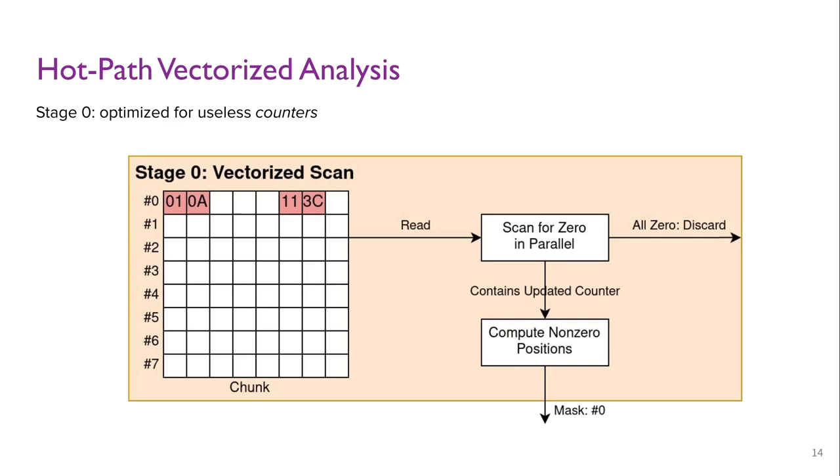At stage zero, RIF scans the bitmap to skip useless chunks of counters which were never updated by the target program. Since the comparison is extremely simple, it can be executed in parallel by fully utilizing the processor's ALUs with single instruction multiple data instructions. For example, AVX512 is an instruction set proposed by Intel for almost 10 years and is widely supported on server processors. It can compare 64 lanes of 8-bit integers in 4 clock cycles. The positions of non-zero lanes are computed as a mask and passed to stage 1.